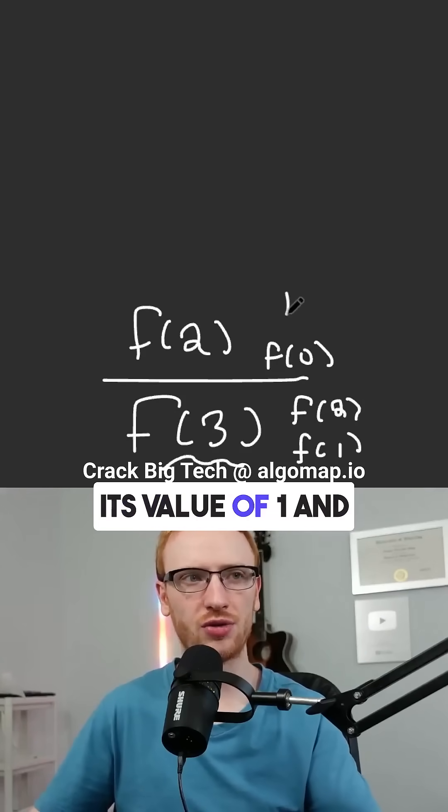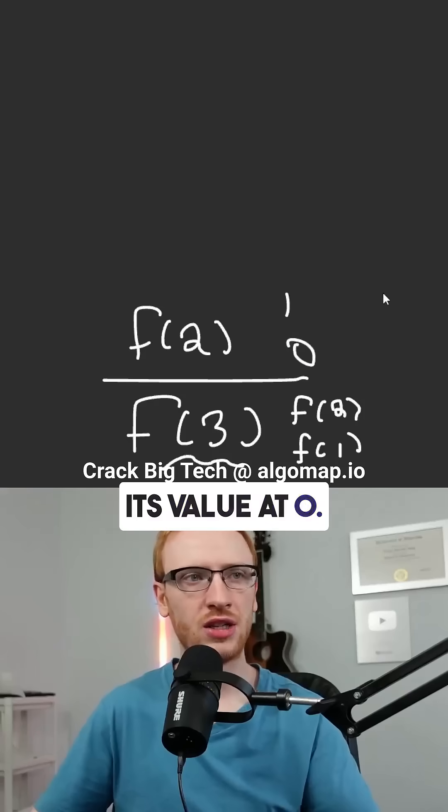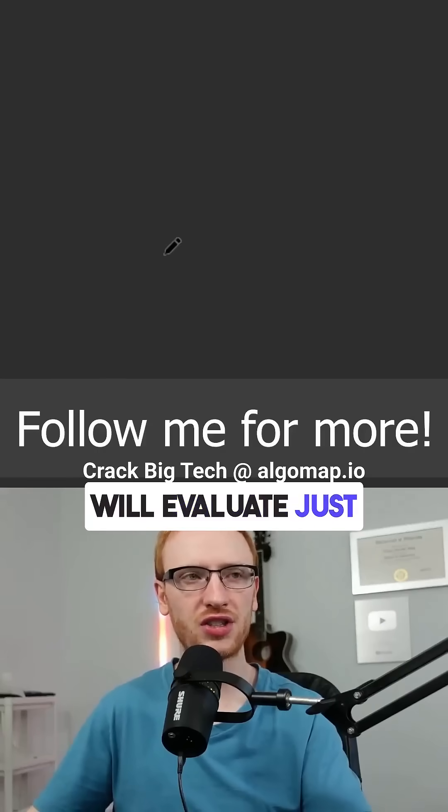So f of 1 turns into its value of 1, and f at 0 turns into its value of 0. So that means f at 3 will evaluate just to the value of 2.